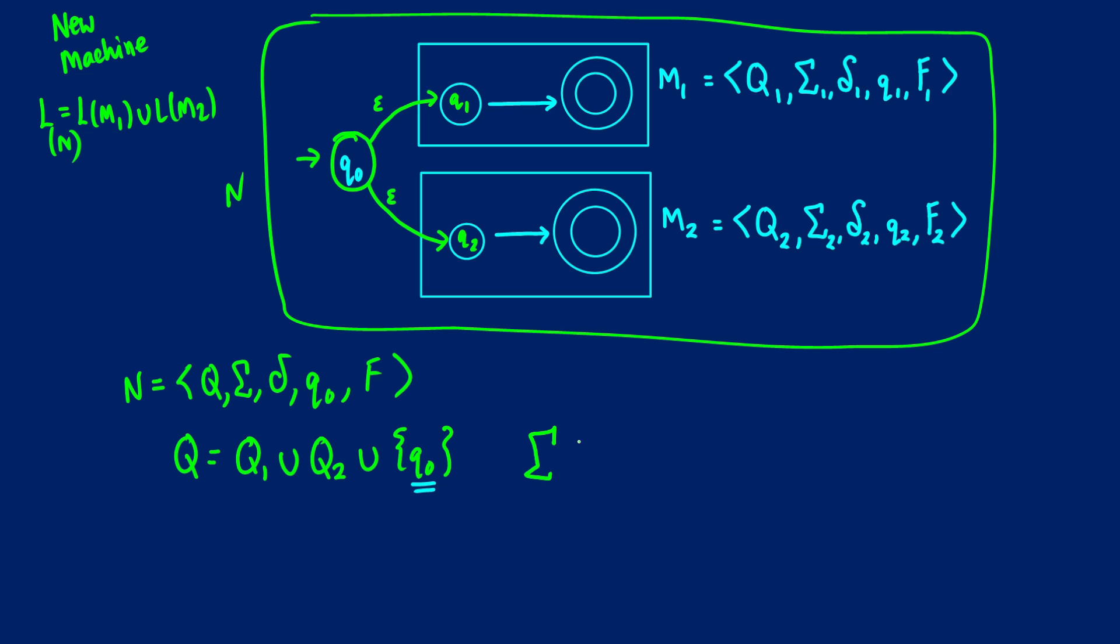In terms of the alphabet, this is just going to be the alphabet of 1, union the alphabet of 2. We're going to do the transition state last. Q0 is the start state. That's going to be the one thing we establish that will be new. All of the old start states will no longer be start states. And then for the accepting states, so we're going to call this F, this is just going to be equal to the union of F1 and F2. So any of the starting states in machine 1 or in machine 2.